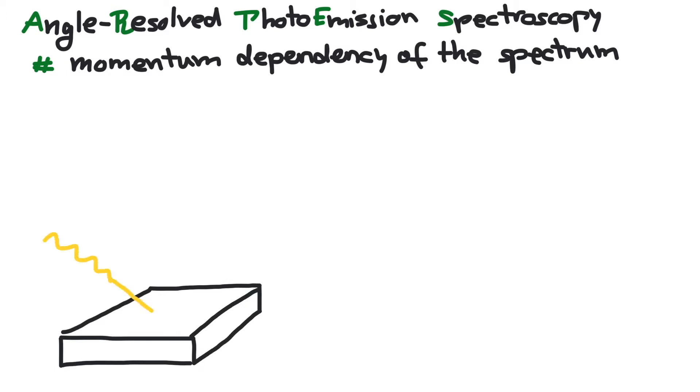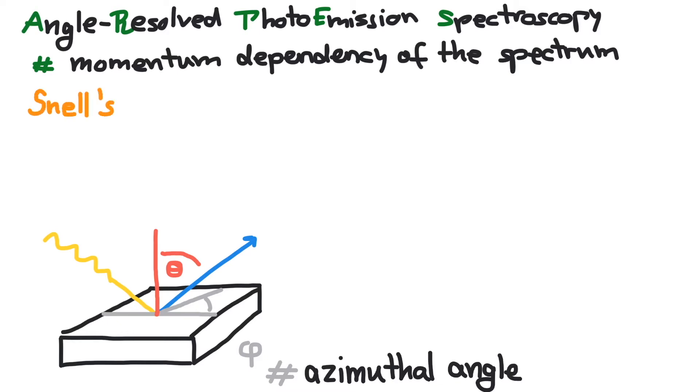Suppose we shoot photons onto a surface and measure the angle under which the electron is emitted. There are two directions to consider: the angle with respect to the surface normal, theta, and the angle outside of the reflection plane, which is called azimuthal angle, phi.